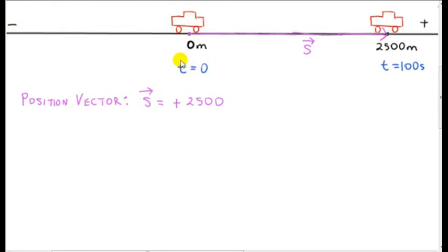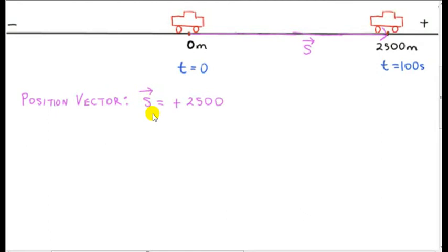In most problems that we deal with, the initial time is t equals zero seconds. So let's suppose that at t equals zero, a car is at the zero position — it's at the origin of the coordinate system. Let's suppose that after 100 seconds, the car is at this position. So we can consider the final position vector of the car, denoted by the letter s.